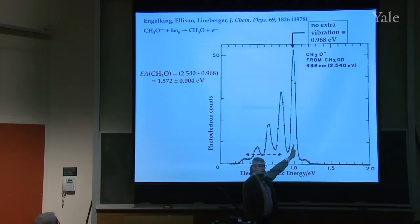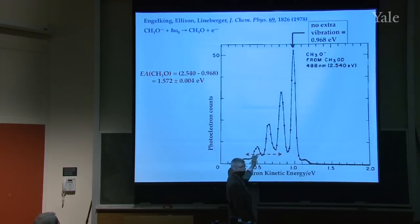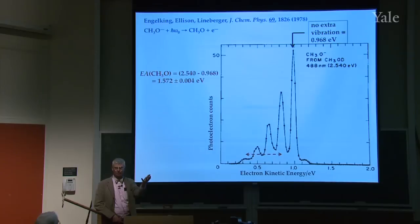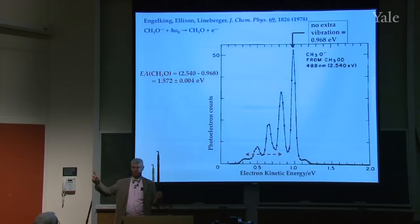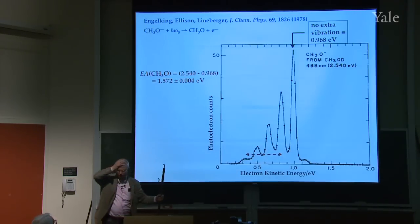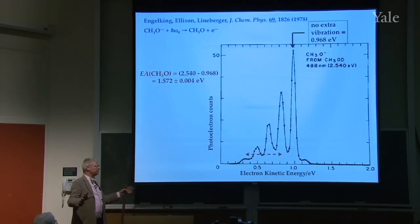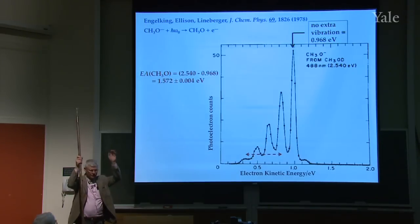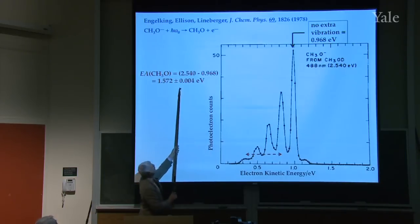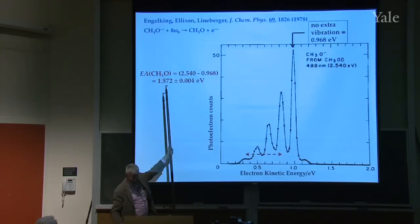This peak is attachment to the ground state of the methoxy radical. This one is one vibration in the methoxy radical, this is two vibrations, this is three vibrations. You can actually take a vibrational spectrum — you're looking at the vibrations in a radical. That's not easy to do, because you don't have a lecture bottle of radicals. This is a very powerful experiment on the one day of the month when it works. You spend most of your time with the hardware, trying to keep the electronics stable. When it works, you get a very clean, precise number.